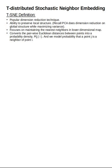T-SNE also maintains the nearest neighbors in the local dimensional map — this is a very important thing to understand. So let's assume we have a high-dimensional representation with a two-dimensional example having five data points: X1, X2, X3, X4, X5. X1 and X2 are close to each other compared to X1 and X3. X4 and X5 are close to each other. This local neighborhood structure is an important thing from a T-SNE point of view.